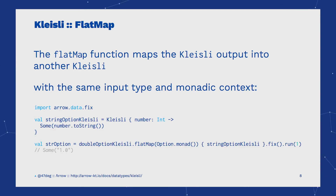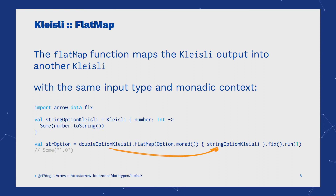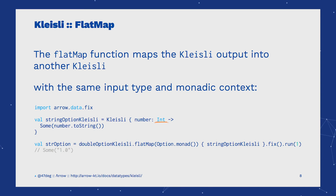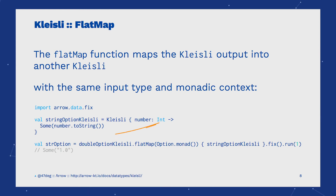The flatMap function composes the Kleisli with another Kleisli, which must have the same input type as the first Kleisli and the same monadic context, to create a new one with the initial input type, the same monadic context, and the second Kleisli's output type.